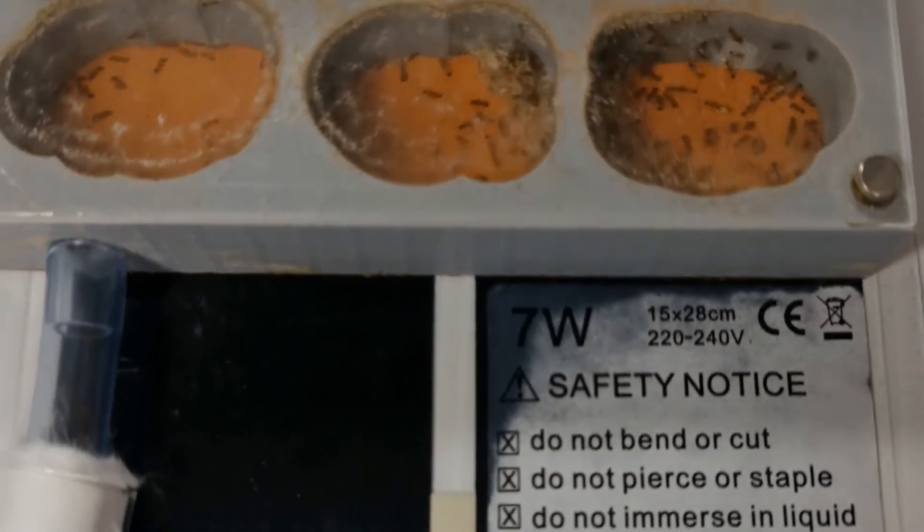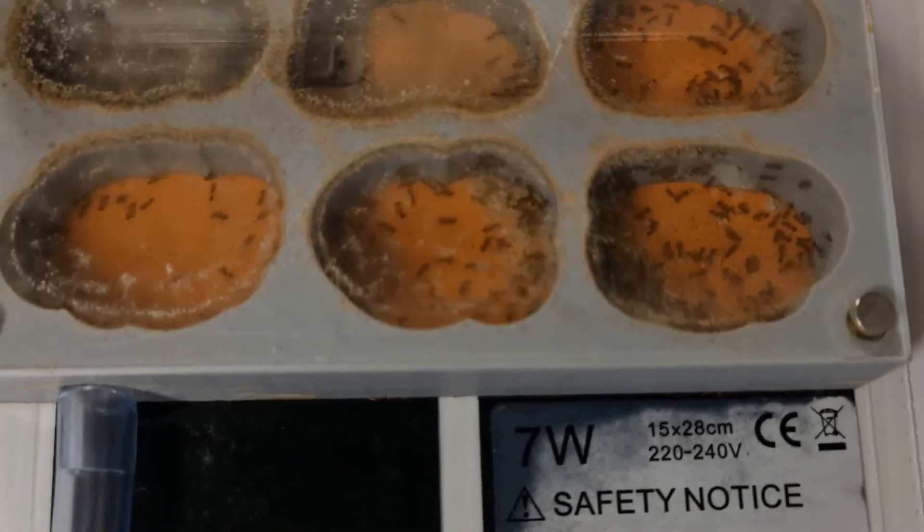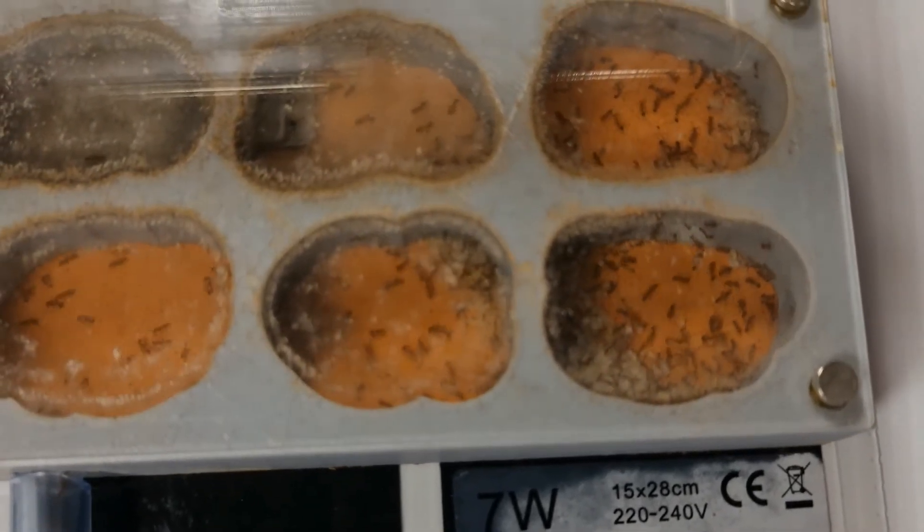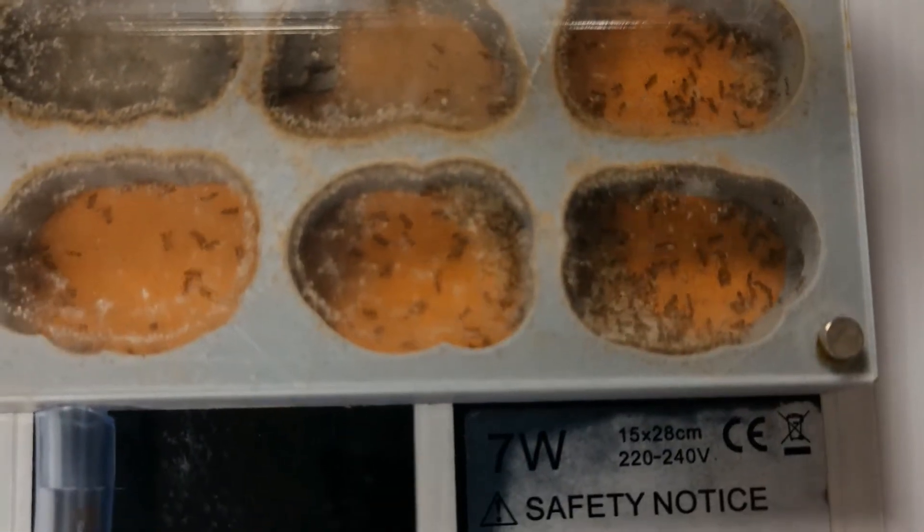You want them to only have one way out, which is into the test tube. Therefore, you will also need to block the exit to the outworld. Make sure the only place not heated by the mat is the test tube where they will eventually move into.